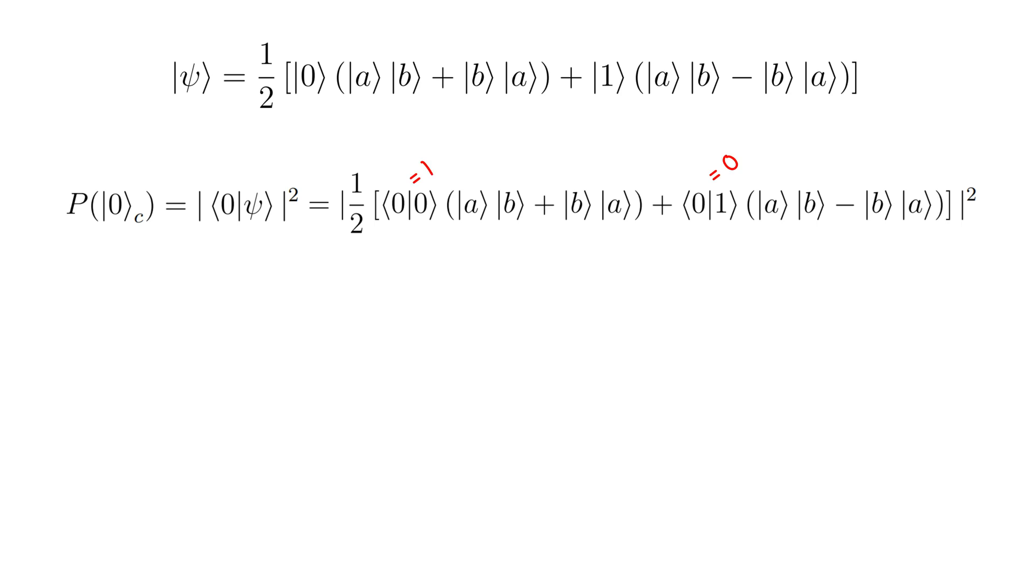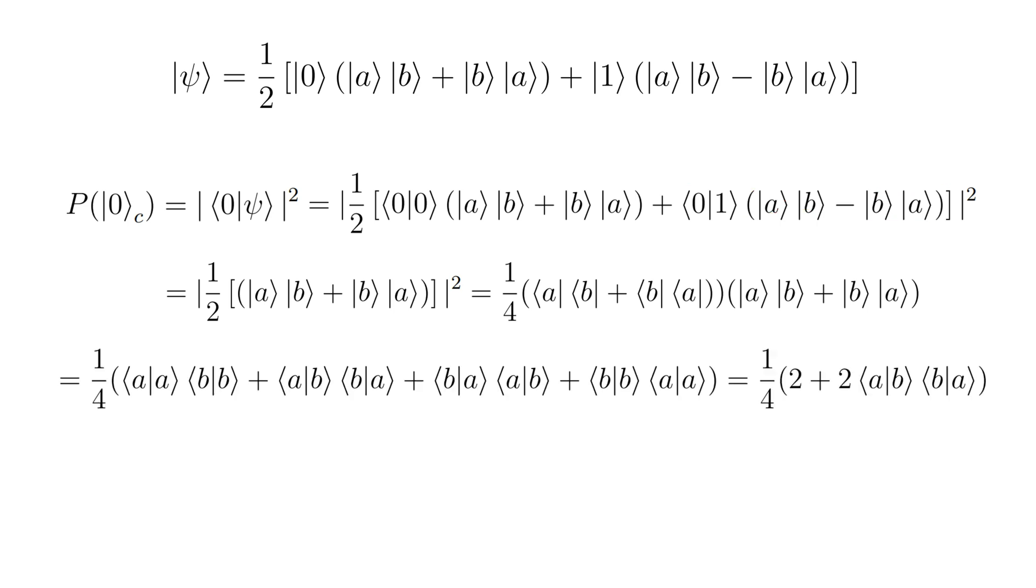Now we substitute expression for psi. State 0 is orthogonal to state 1, therefore the second term vanishes. Now we can write down the squared absolute value. After multiplying two expressions in brackets and doing some simple math, we get the probability to measure the control qubit in state 0.